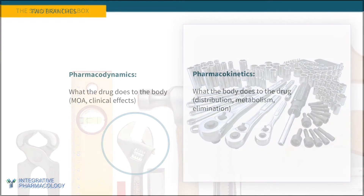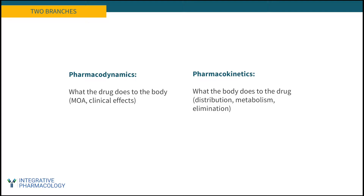If you've ever opened a pharmacology textbook, you'll notice there are two branches — and unfortunately they're often in two different parts of the book, but please realize these are integrated. Pharmacodynamics describes what the drug does to the body: its mechanism of action and clinical effects. Pharmacokinetics is all about what the body does to the drug — distribution, metabolism, elimination, and so forth. In this lecture we'll focus on pharmacodynamics, and in part two we'll focus on pharmacokinetics.